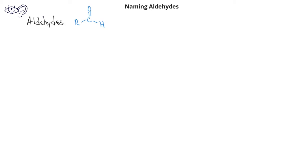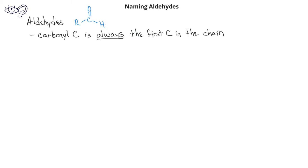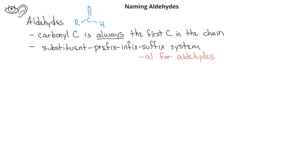As we saw earlier, aldehydes are carbonyl compounds that have a hydrogen bonded to the carbonyl carbon. As with the carboxylic acid derivatives, the carbonyl carbon is always the first carbon in the carbon chain for aldehydes. We still use the same nomenclature system that we've used for the carboxylic acid derivatives. We change the suffix from an E for a hydrocarbon to AL for an aldehyde.